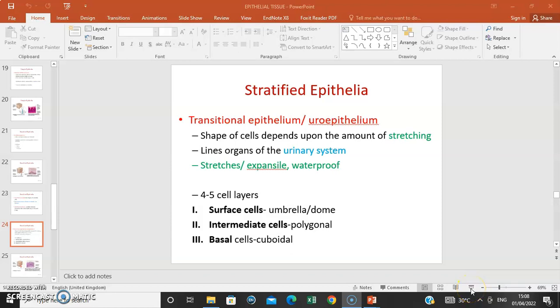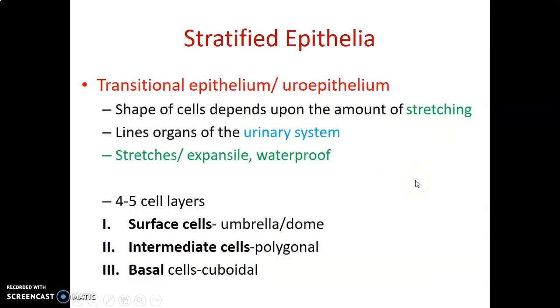Welcome back. We stopped at transitional epithelium, also called uro-epithelium. This epithelium is found in the urinary tract — the ureters, the urinary bladder, or the urethra. It is adapted for function in that it is stretchable, expansile, and waterproof, so you are not going to leak urine into the substance of other tissues. You are able to maintain urine within the urinary tract.